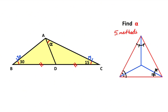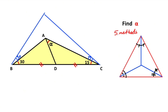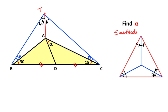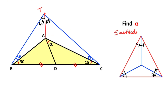Let's call this point T and connect these two points. Notice that here is 60 degrees and here is 30 degrees, so 90 degrees is left. Since the red line is an angle bisector, these must each be equal to 45 degrees. If you focus on this triangle, it is a 30-60-90 special right triangle.